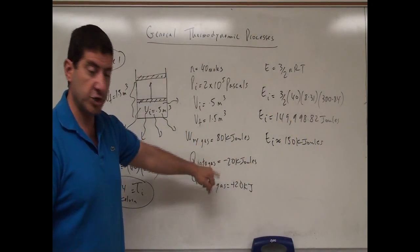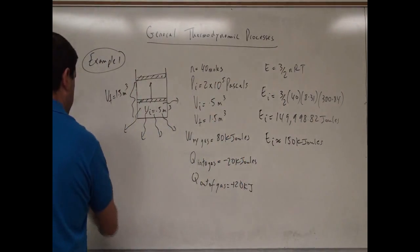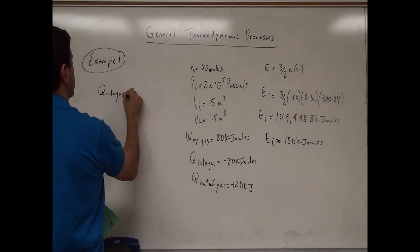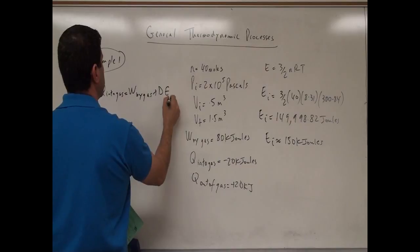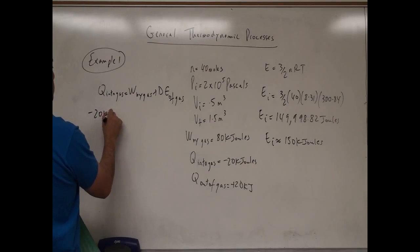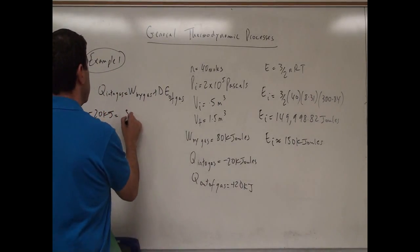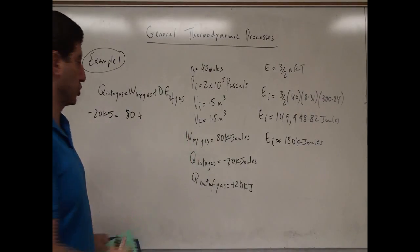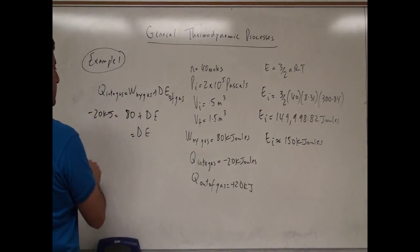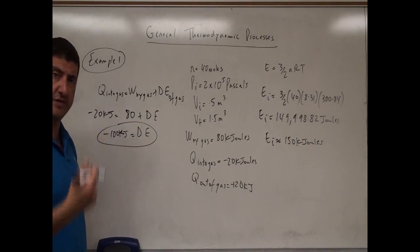Using the first law of thermodynamics: Q into gas = work done by gas + change in internal energy. Q into gas is negative 20 kilojoules, and work done by gas is 80 kilojoules. So the change in internal energy is negative 20 minus 80, which equals negative 100 kilojoules. The gas is really going to cool down — the internal energy has dropped significantly.